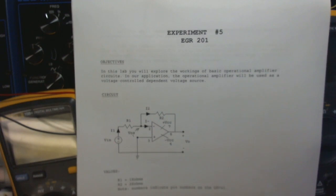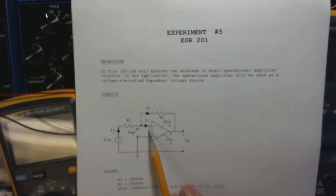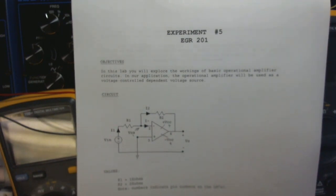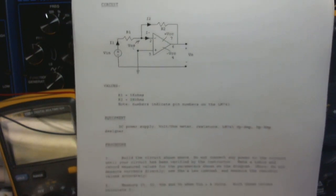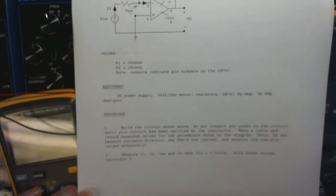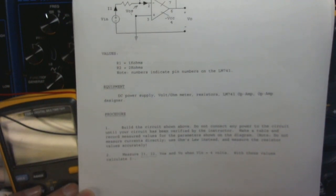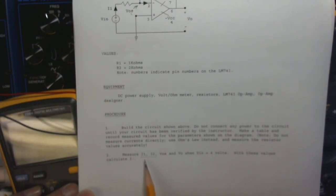You can see the points on the circuit — pin number two, pin number three, pin number seven, pin number six, pin number four. Looking at the procedure, we're going to build the circuit and then measure I1 and I2, but not directly. I've already carefully measured the resistance of those resistors — removed them from the circuit, measured their resistance, and put them back in. Then when I measure the voltage across them and divide by that resistance, I can get the current.